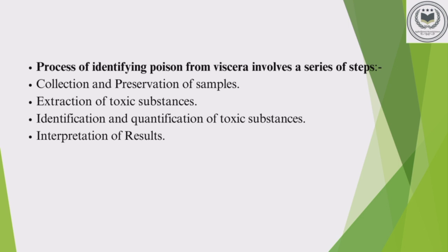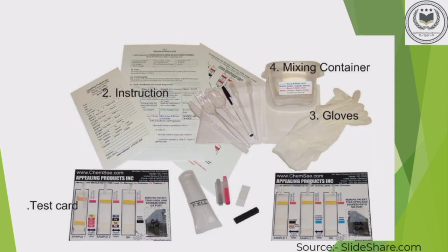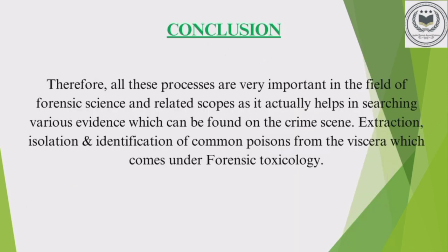The further investigation required in cases is based on the interpretation of results, so it is a major part of the process. All these processes are of major use and importance in the field of forensic science, as they help in finding various evidences from crime scenes and suspected cases. Extraction, isolation, and identification of common poisons from viscera falls under forensic toxicology as a major subject, and thorough knowledge of it is essential for every forensic toxicologist.